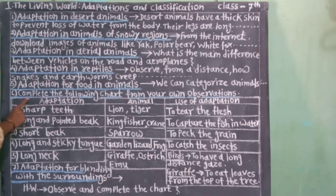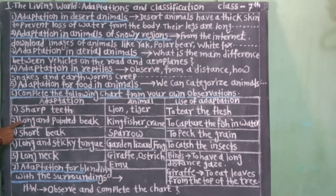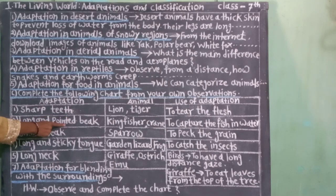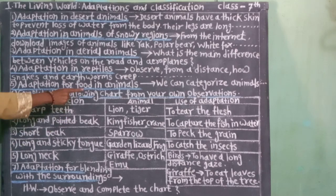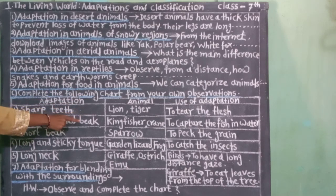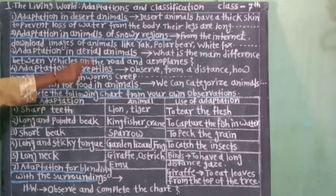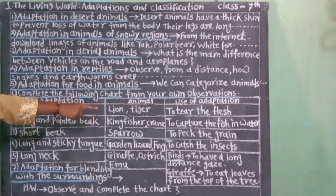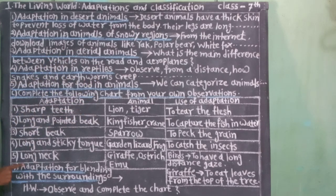Number 2. Adaptation: long and pointed beak. Animal: kingfisher, crane. Use of adaptation: to capture fish in water.